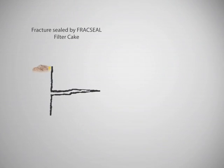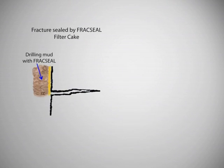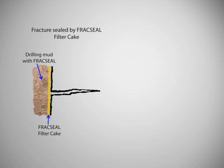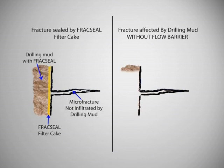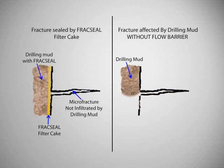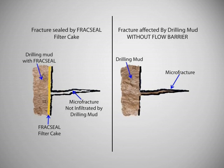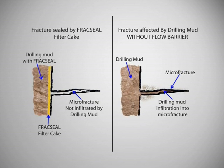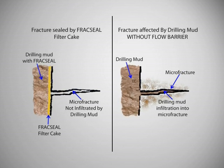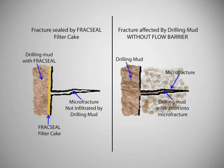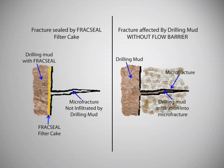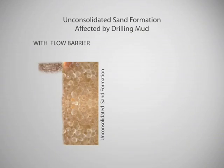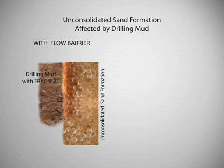Now we will see the difference between fractures sealed by mudcake containing sufficient Fraxel particles and mudcake with no Fraxel. With Fraxel, the seal is impermeable — there is no fluid infiltration and wellbore integrity is established. With fluid infiltration, the formation becomes weak, with a high tendency for wellbore failure or collapse.